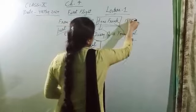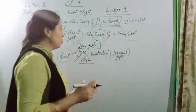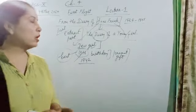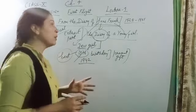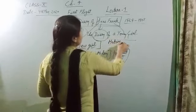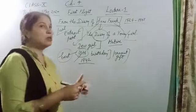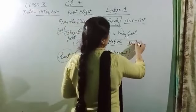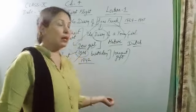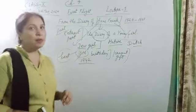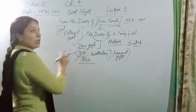She got the diary at her 13th birthday in 1942. She was born in 1929 and she died in 1945. But in that short time period, she wrote her experience just like a mature person. It is a renowned, famous diary of Anne Frank and it is published in many languages. Originally it is written in Dutch, but later it was published in other languages including English.